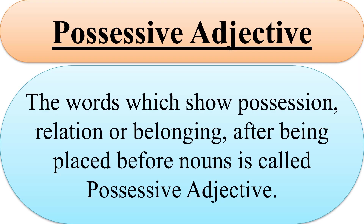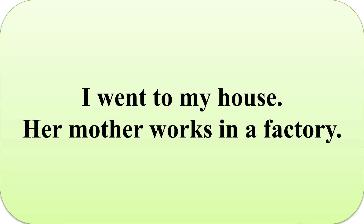The last one is Possessive Adjective. The words which show possession, relation or belonging, placed before nouns, are called Possessive Adjectives. For example: 'I went to my house' and 'Her mother works in a factory.' The words 'my' and 'her' show relation or possession for the nouns 'house' and 'mother'. So, they are Possessive Adjectives.